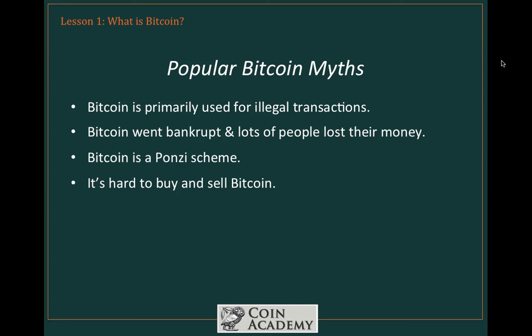The final myth, one that has just cropped up recently: Bitcoin was created by the CIA. I honestly don't know where this comes from other than a general tendency to blame everything on the CIA. We don't know who the original creators of Bitcoin were, but it makes no sense because it is an open-source software system — anyone can see the code, download it, put it on their computer, and use it. It really doesn't serve any benefit for it to have been created by the CIA. It strikes me as nothing short of implausible.